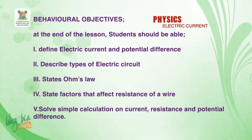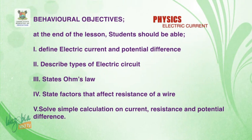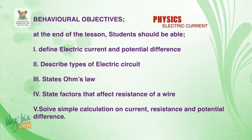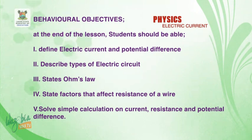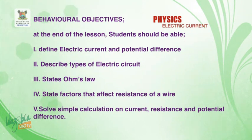Our behavioral objective is that at the end of the lesson, students should be able to: 1. Define electric current and potential difference. 2. Describe types of electric circuits. 3. State Ohm's law. 4. State factors that affect the resistance of a wire. 5. Solve simple calculations on current, resistance, and potential difference.